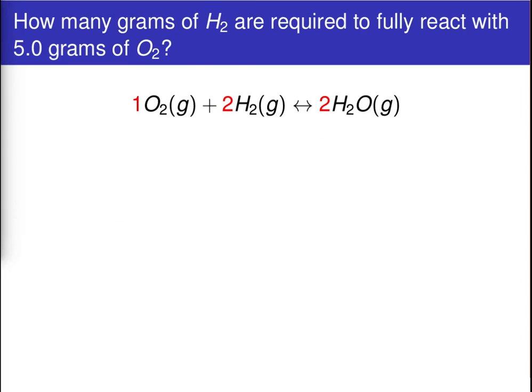Now we're ready to add on another step. We've seen how we can convert between the number of moles or molecules of a given reactant and another reactant or product. Now, what we want to do is take it a step further and look at actual mass of reactants or products. The reason for this is quite simple: anytime you're in a laboratory setting, you're typically going to be dealing with mass — or sometimes volume. There's no device that allows us to count individual molecules or moles of molecules; what we can do, however, is measure a certain mass of molecules.